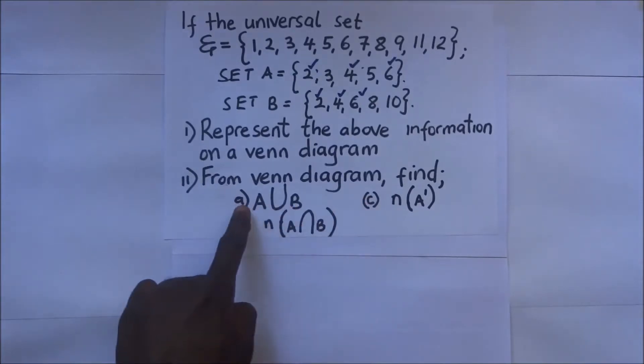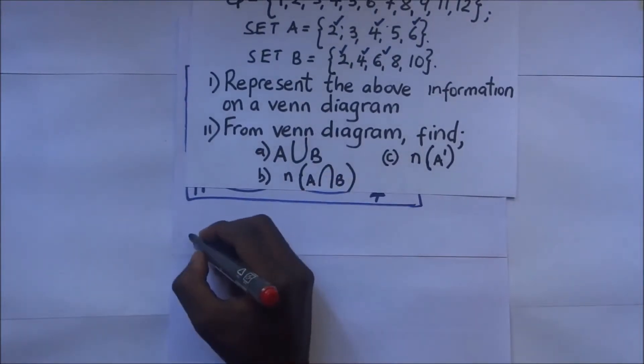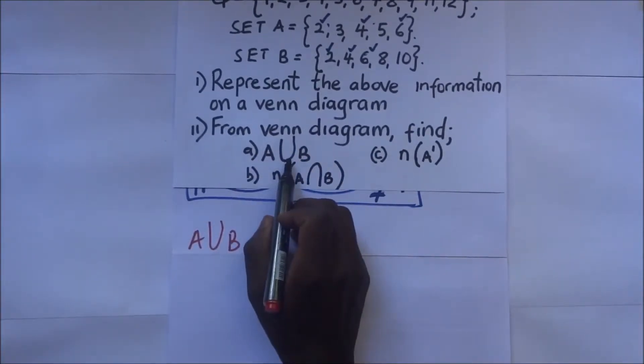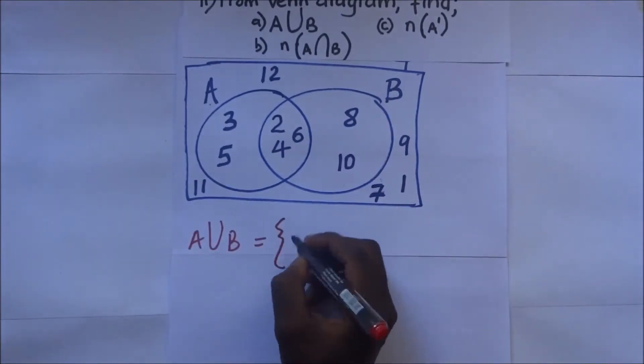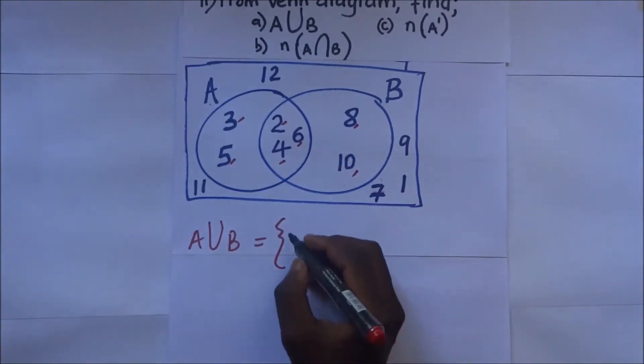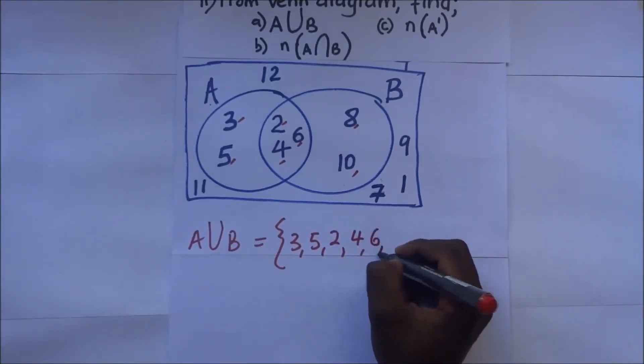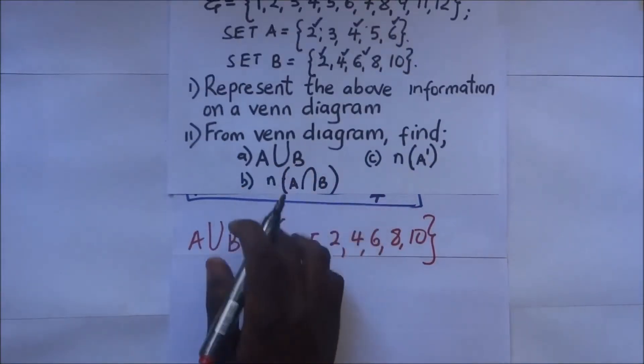Part A is telling us from the Venn diagram find A union B. This is how we represent it: A∪B. A union B means all members in the union set, all members that are joining A and B. So A union B is this, this, this, this, this, and that. So A union B is {3, 5, 2, 4, 6, 8, 10}. Those are members in A union B.